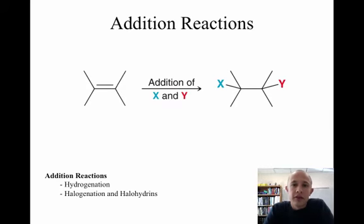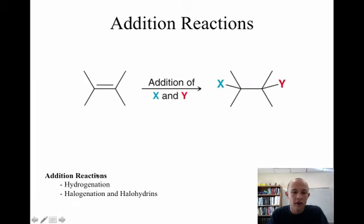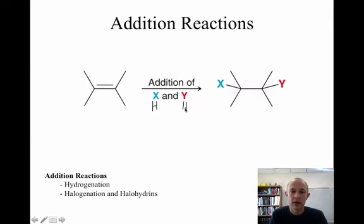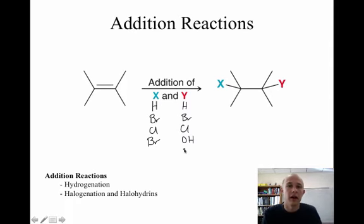In this video we'll keep talking about addition reactions. We're going to talk about three reactions that are related to one another: the hydrogenation reaction, the halogenation reaction, and the halohydrin formation. For hydrogenation, both X and Y will be a hydrogen atom. Halogenation will be either bromine or chlorine. Halohydrin formation would be one halogen and one OH group. We'll also talk about their stereochemistry, because there are important differences between these reactions, and the mechanism will help us explain those differences.